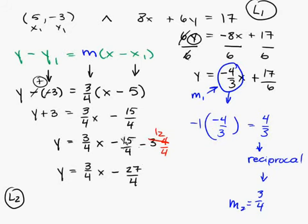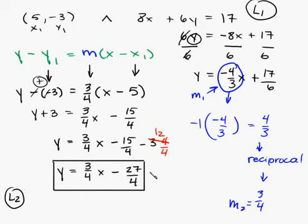See, what I did here was negative 15 plus a negative 12 makes a negative 27. Okay, so this would be the equation you're looking for. Now you can say that line 1 up here is perpendicular to line 2. Hence, line 1 is perpendicular to line 2.